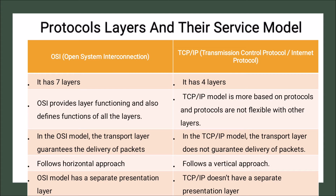The transport layer in the OSI model guarantees the delivery of packets, but in the TCP/IP model the transport layer does not guarantee the delivery of packets. Additionally, the OSI model follows a horizontal approach while the TCP/IP model follows a vertical approach for communication.